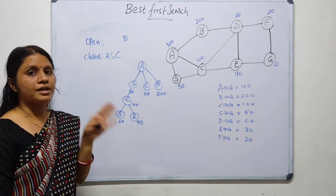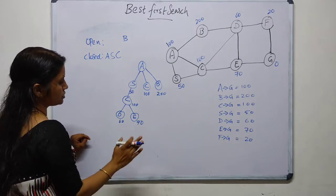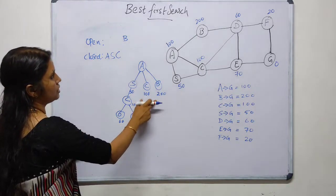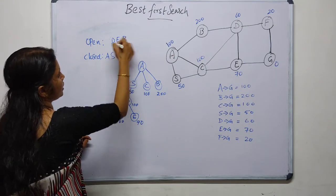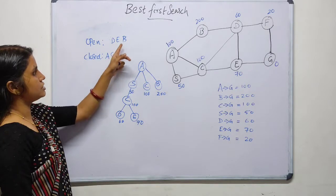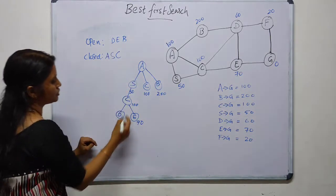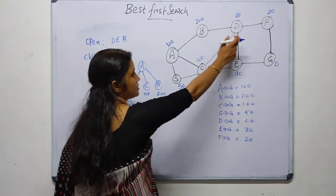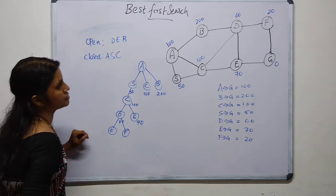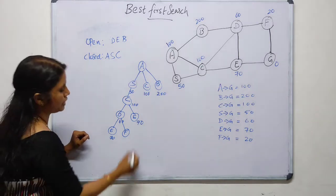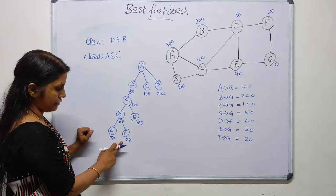We move C to the closed list and insert its successors D and E into the open list. The open list must remain in ascending order, so we write D (60), E (70), then B (200). The next node to be traversed is D because it has the minimum heuristic value of 60. We generate the successors of D, which are F and E. The heuristic value of E is 70 and F is 20. F contains the minimum value of 20.